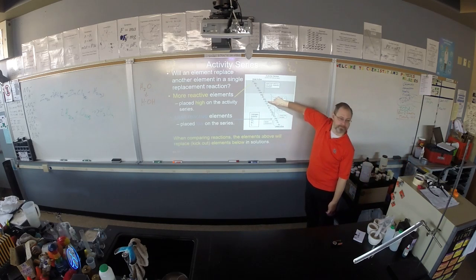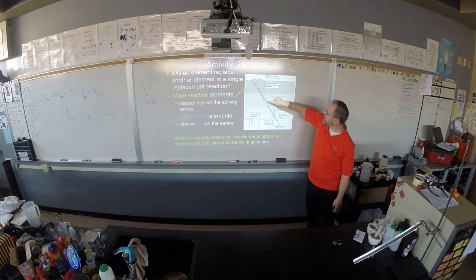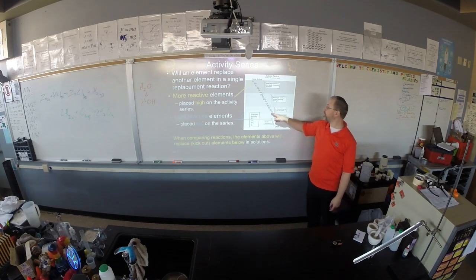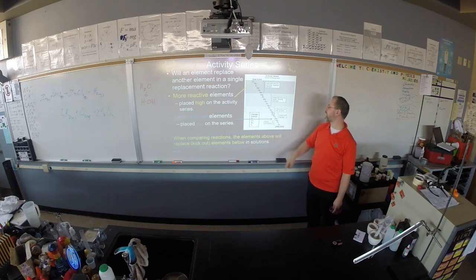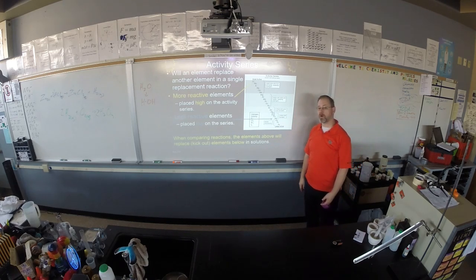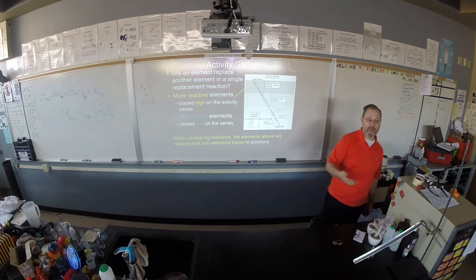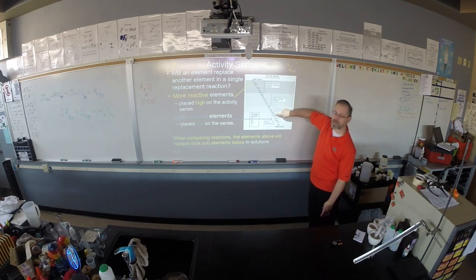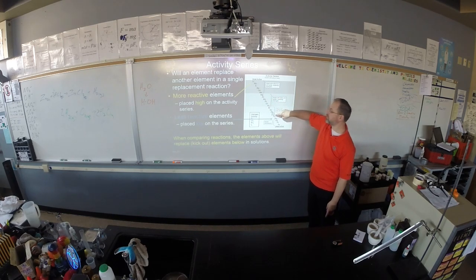But see, see how zinc is right there? Zinc is above hydrogen. Hydrogen is put in, even though it's not a metal, it's put in here because this is the ones that will react with acid. If you want to know if a metal will react with acid in the activity series, zinc will, you saw, because zinc is above H2. Zinc will kick out hydrogen.